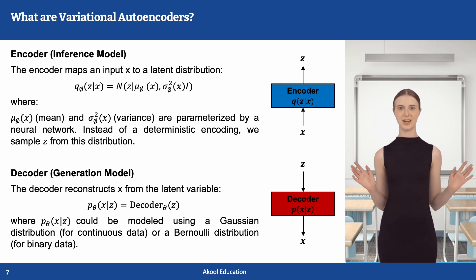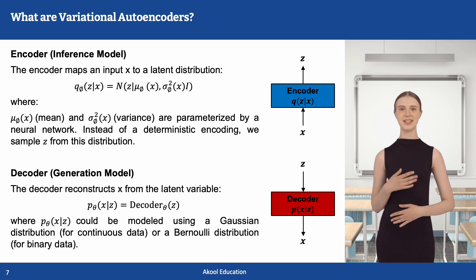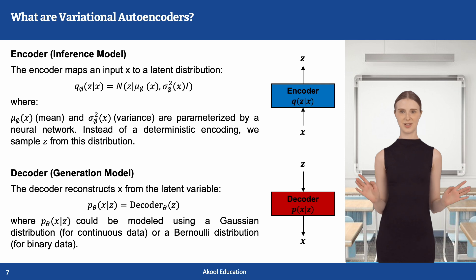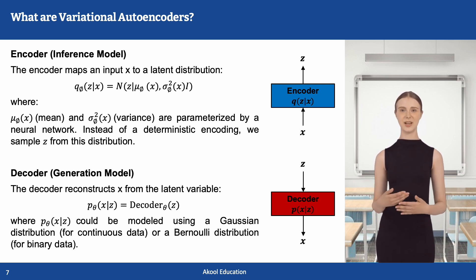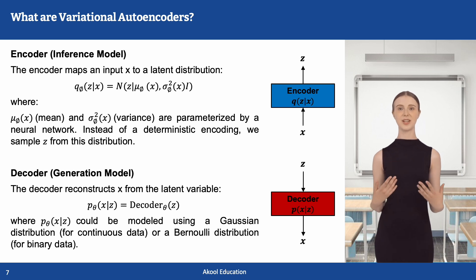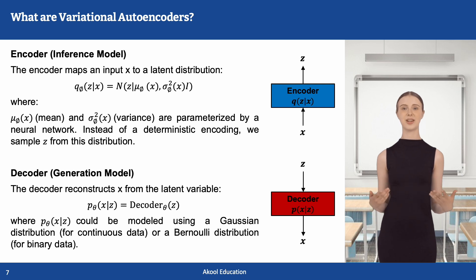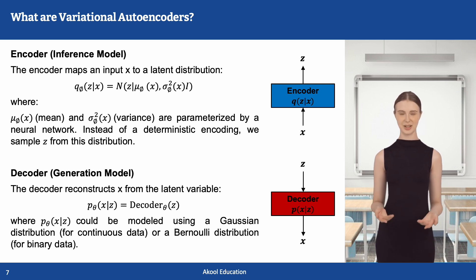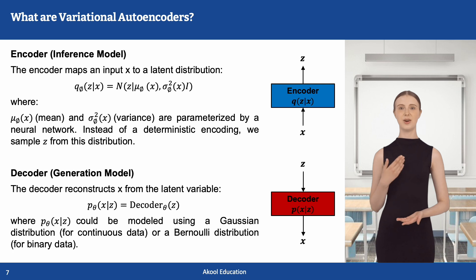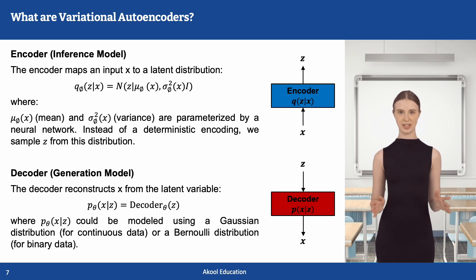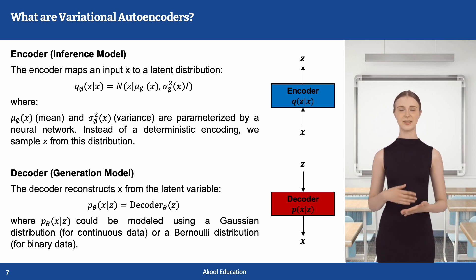The core components of a variational autoencoder are the encoder and decoder, which work together to map data into a structured latent space and reconstruct it back to the original space. The encoder, which serves as an inference model, takes an input X and maps it to a latent distribution instead of a fixed vector. It outputs two parameters — the mean mu and the variance sigma squared — defining a Gaussian distribution in the latent space. Instead of directly passing mu and sigma squared to the decoder, the VAE samples a latent vector Z using the reparameterization trick, sampling from a Gaussian distribution parameterized by mu and sigma squared.